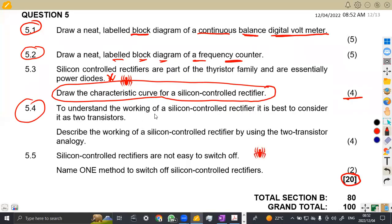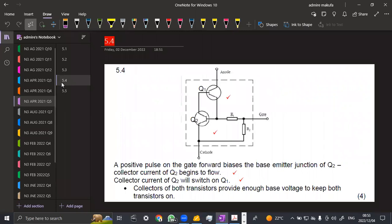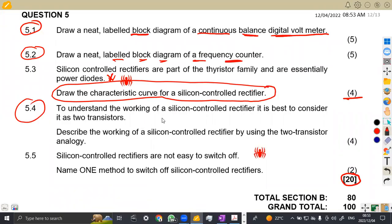5.4. To understand the working of a silicon controlled rectifier, it is best to consider it as two transistors. Describe the working principle of a silicon controlled rectifier by using the two transistor analog. Let's get back to the question. The best is to consider if it has two transistors. Describe the working of a silicon controlled rectifier using the two transistor analog. So we're going to have a diagram, then the explanation.